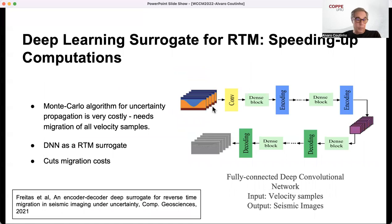Still, we have to do Monte Carlo. In order to speed up computations, we introduced a deep learning surrogate for RTM. The idea here is to use a fully connected deep convolution neural network to learn the relation, the nonlinear map between the velocity ensemble and the images. You can see the details in our recent paper here.